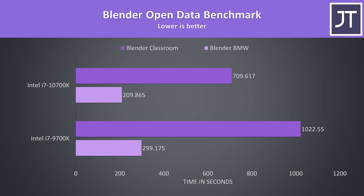I've tested the Blender BMW and Classroom benchmarks. This is another threaded test, so the 10700K was around 44% faster than the 9700K, again mostly due to the addition of hyperthreading.